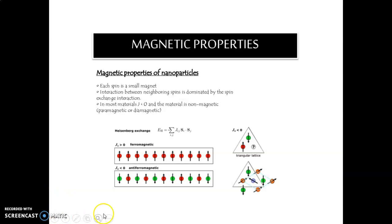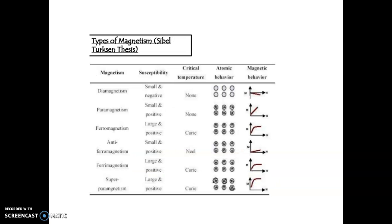Due to this, what will happen — this is the anti-ferromagnetic. But due to the spin of neighboring spins, we are getting a maximum magnetic condition. So, that material gets more magnetic — that nanoparticle is getting more magnetic as compared to other materials.